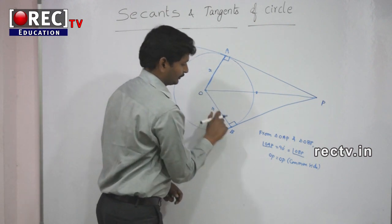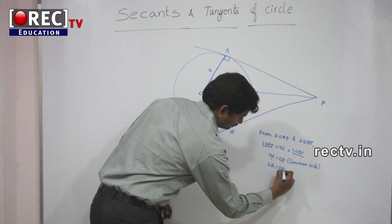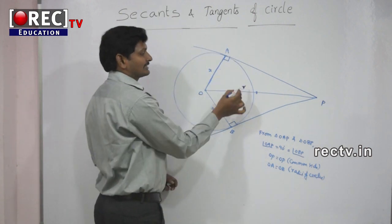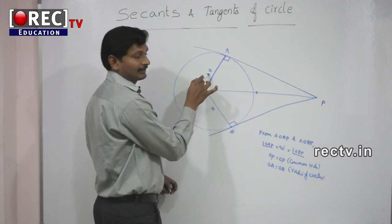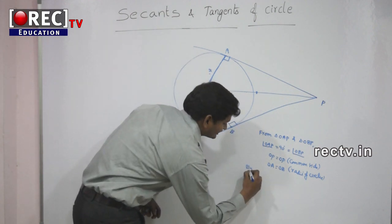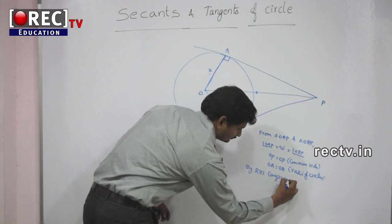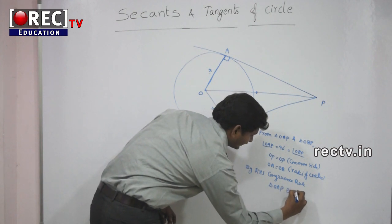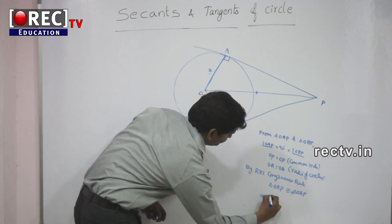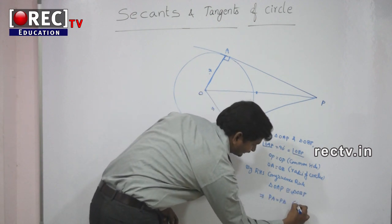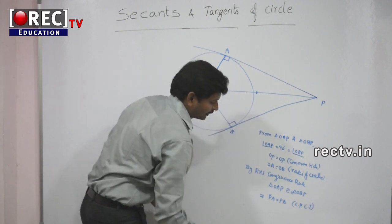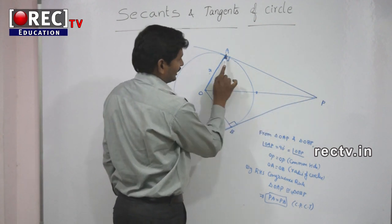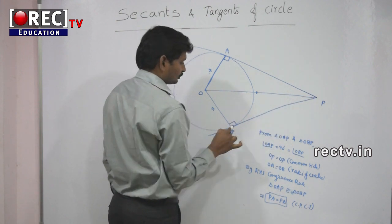OA is equal to OB as radii of the circle. By using the RHS congruence rule — right angle, hypotenuse, and one side — triangle OAP is congruent with triangle OBP. From this we can say that PA is equal to PB, by CPCT, corresponding parts of congruent triangles. That means the length of the tangent from point P to A is equal to the length of the tangent from P to point B.